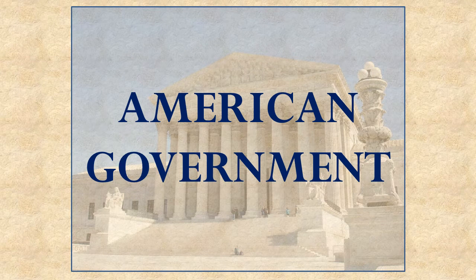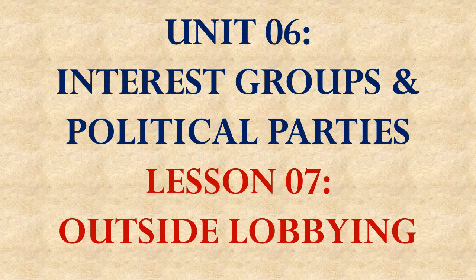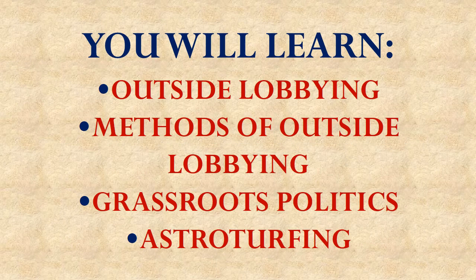Hello, this is Professor James Strickler, and this is a course in American government. This lesson is from Unit 6, about interest groups and political parties. This is Lesson 7 concerning outside lobbying. In this lesson, you'll learn about what outside lobbying is, the methods of outside lobbying, grassroots politics, and astroturfing.